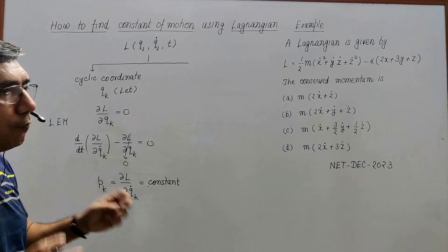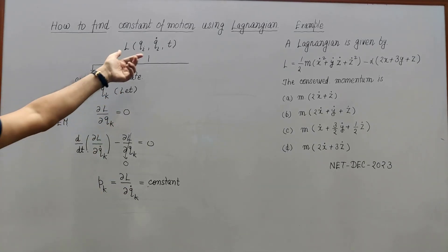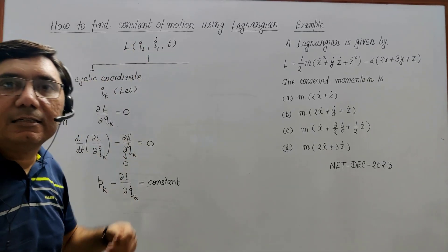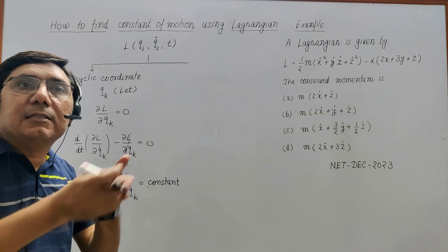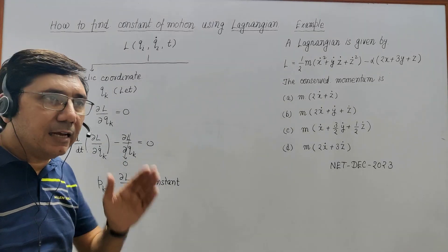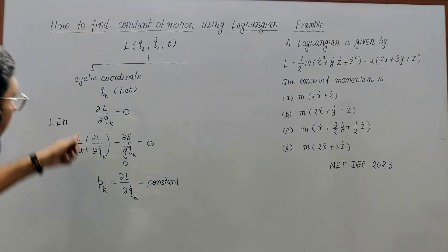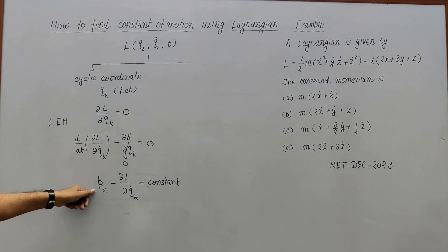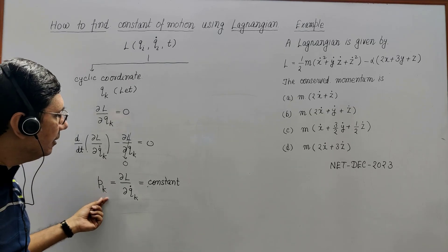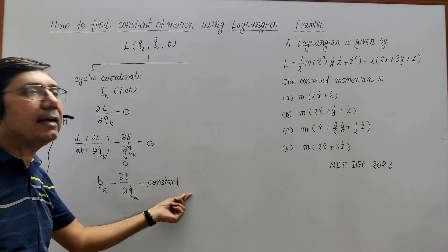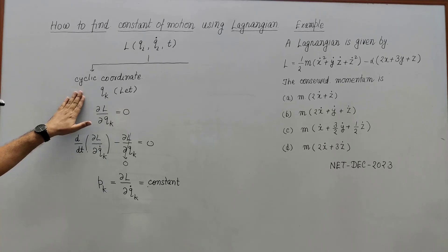This quantity ∂L/∂Q̇ₖ represents Pₖ — the generalized momentum corresponding to the generalized coordinate Qₖ. So in the first method, you look at the Lagrangian and try to find out whether there is a cyclic coordinate or not. If a cyclic coordinate exists, then the corresponding generalized momentum acts as a constant of motion.